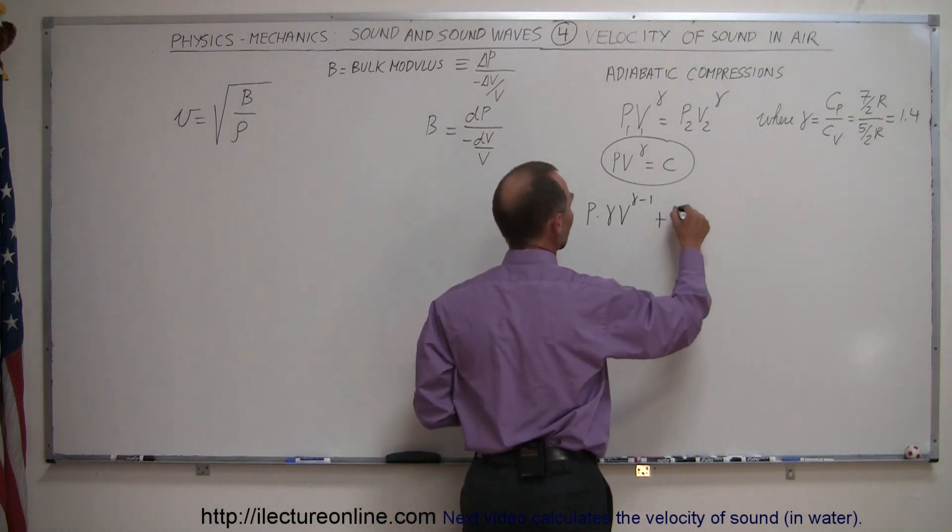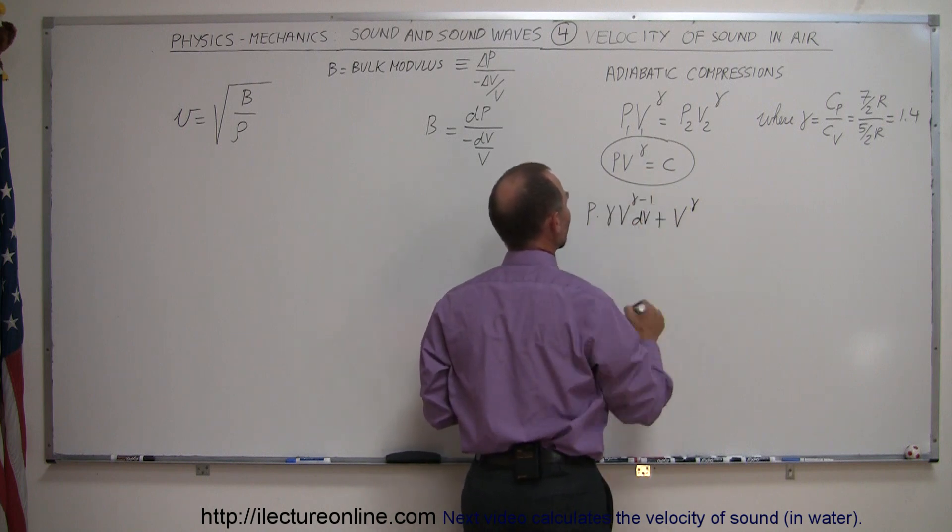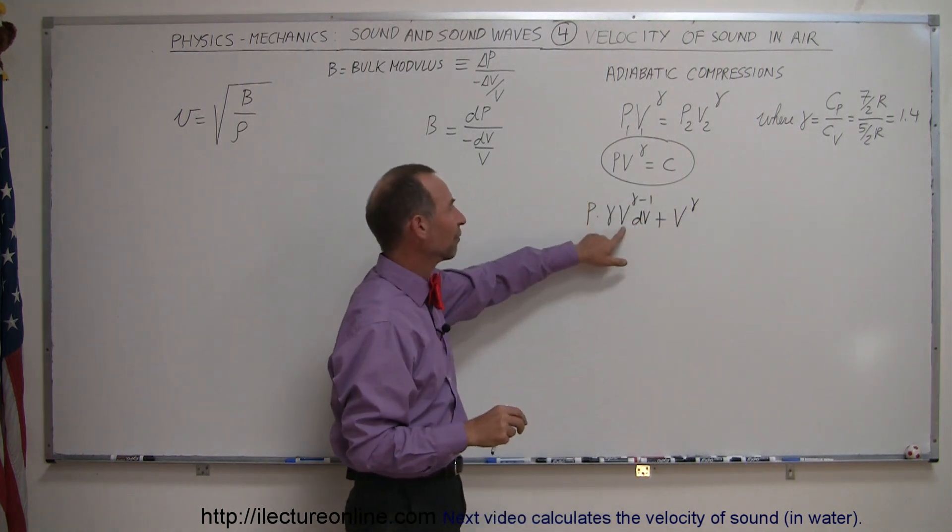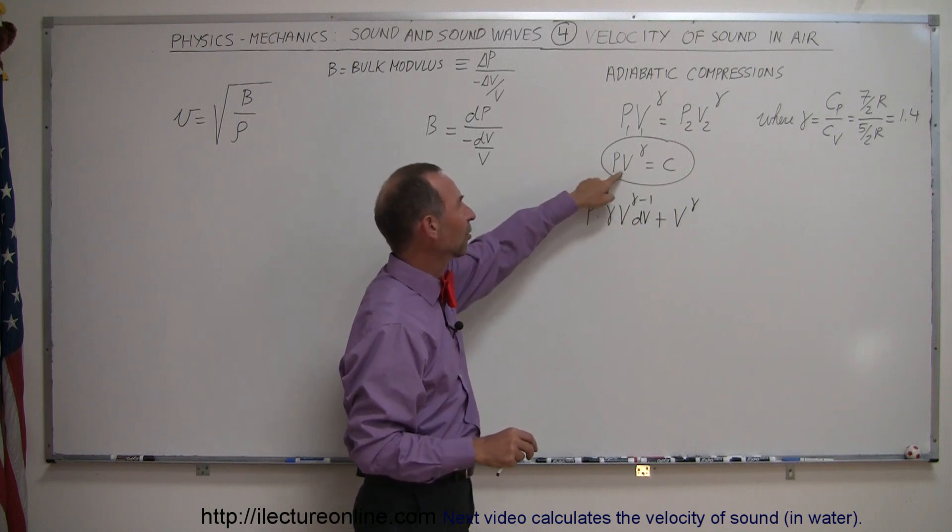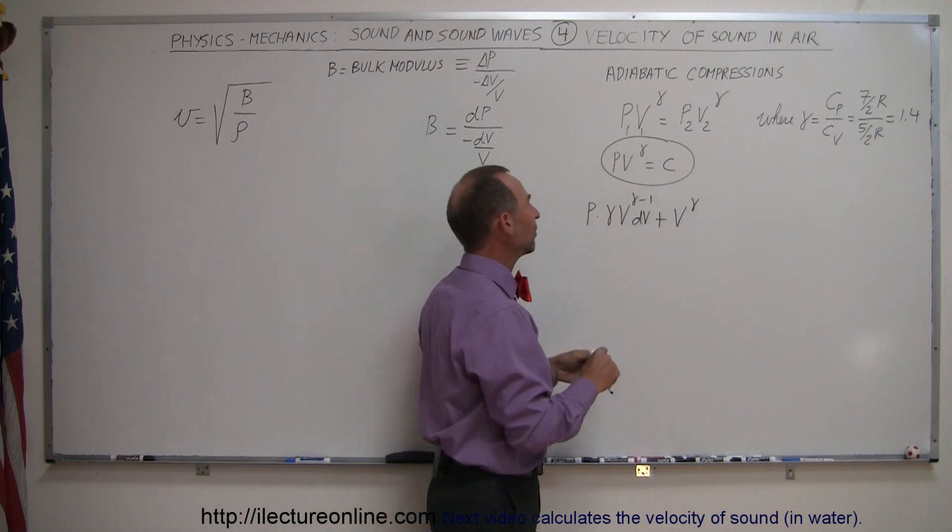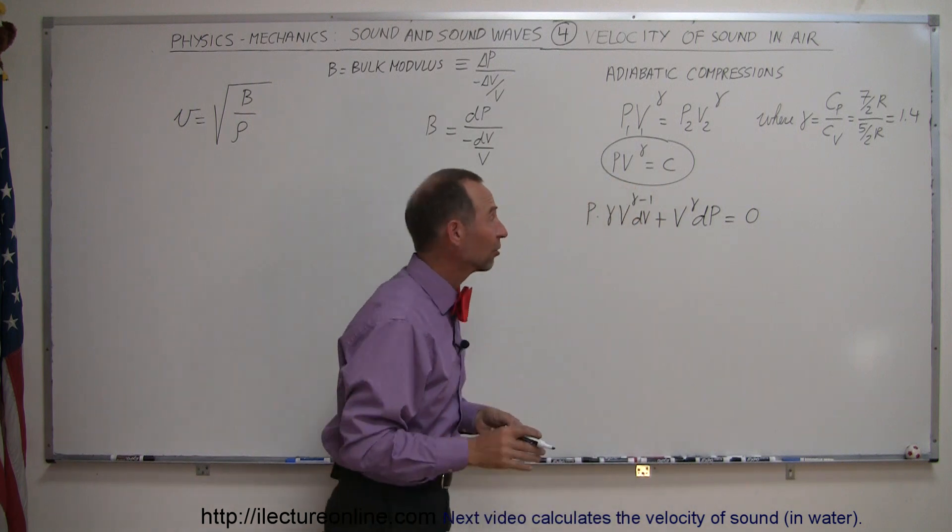plus the second, which is V to the gamma, times the differential. I forgot one thing - I still have to have a DV in here, because if I take the derivative of V, I get DV. And then the differential of this product, we get the second times the differential of the first, which is DP, equals 0, because the differential of a constant is 0.